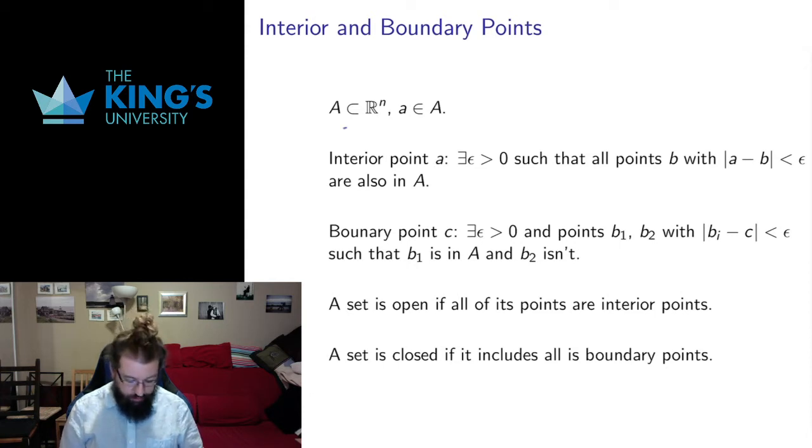So if I have a subset of R^n and a point in that subset, that point is called an interior point if this condition holds. There exists some small epsilon such that all points b with |a - b| < epsilon are also in A. So a is here, we've got a little circle or sphere of radius epsilon, so all other points within that are also in the set.